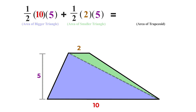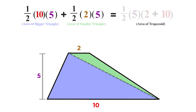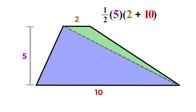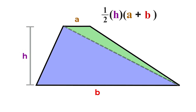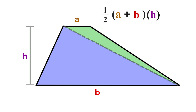Now we have the areas of the two triangles that make up our trapezoid. Before we simplify, notice that we have common factors — specifically one half and 5 — so let's factor those out and rewrite this expression in factored form. If we generalize this logic using variables — a for the shorter base, b for the longer base, and h for the height — and rearrange the order of multiplication, we arrive at the trapezoid area formula.